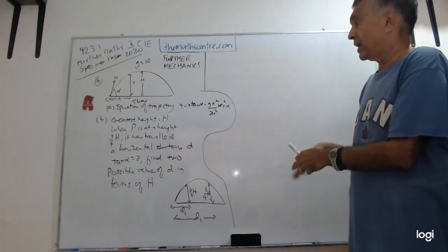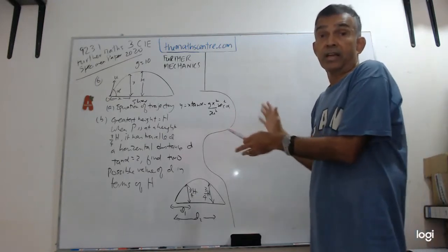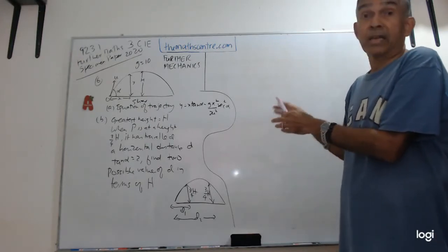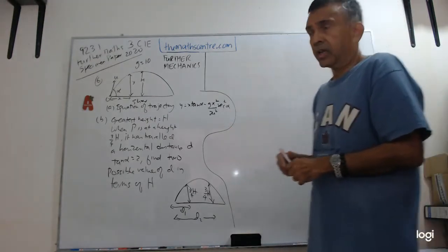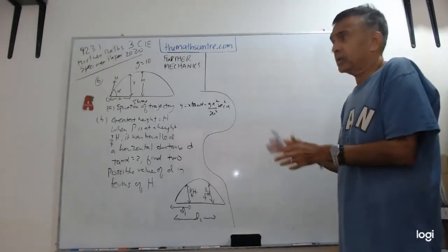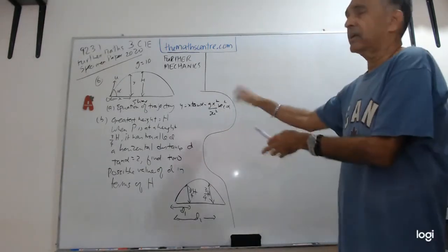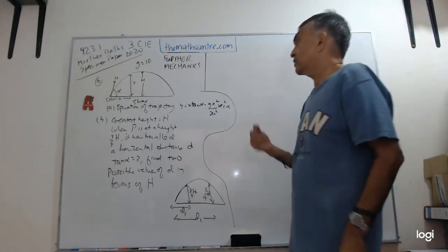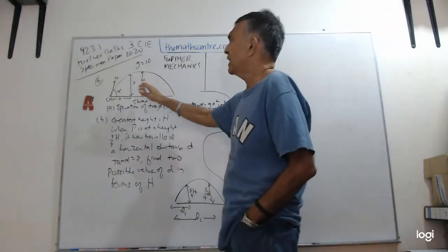Look, the question itself, I don't want to waste time reading it. You go ahead and read it on your own. I just want to talk about the general ideas. First off, this question involves projectiles. In the first part, in question, I think it's question number 6 part A, they ask you to show that the equation of the trajectory is Y equals X tan α minus GX² over 2U² sec² α. So we need to do a little bit of derivation. So first we will look at this picture here. I've drawn the